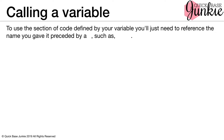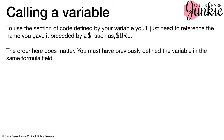To use the section of code defined by your variable, you'll just need to reference the name you gave it preceded by a dollar sign, such as dollar sign URL. The order here does matter — you must have previously defined the variable in the same formula field before you can call that variable.